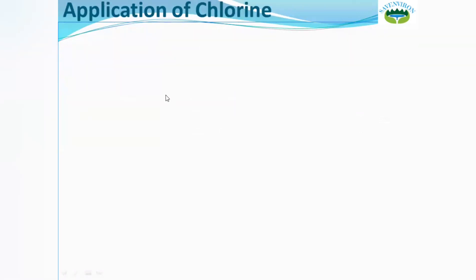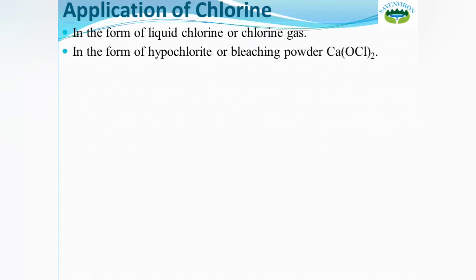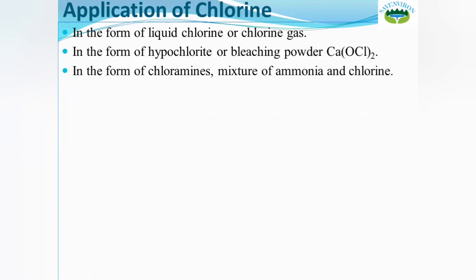Chlorine can be applied to water in several forms: as liquid chlorine or chlorine gas; as hypochlorite or bleaching powder (Ca(OCl)2, NaOCl); as chloramines — mono-, di-, or trichloramines, which are a mixture of ammonia and chlorine; or as chlorine dioxide (ClO2).